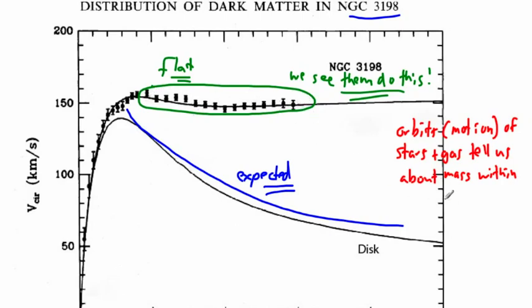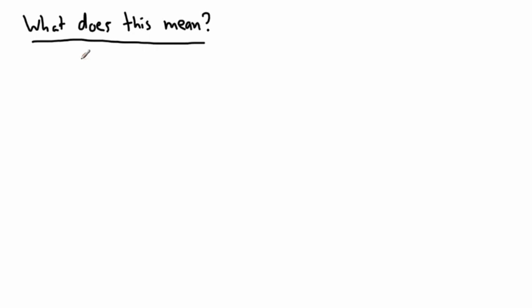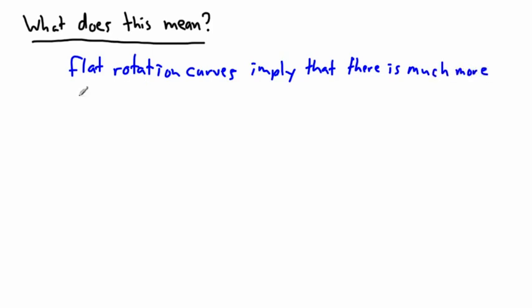So our problem is we're missing data points. We still expect this thing to drop down. So we can infer that we don't have enough data points. We can't see things far enough away where they should be going downwards. What this really tells us is the cool thing. The flat rotation curves imply that there's much more mass in a galaxy than expected.